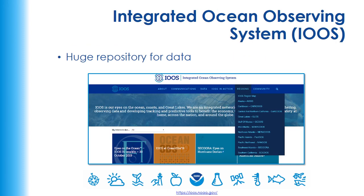The Integrated Ocean Observing System, or IOOS, is another big deep dive. They have a lot of region-specific data and you can select whatever region you're interested in and explore the data from there.